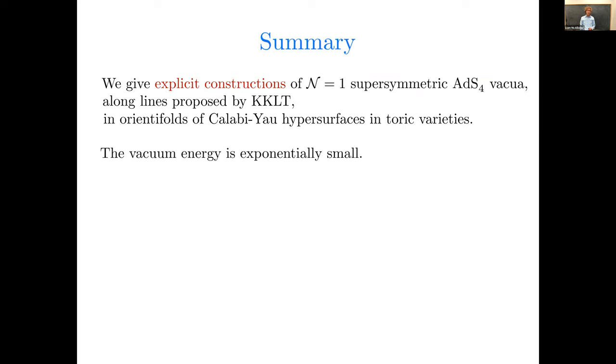We find that the vacuum energy is exponentially small. Indeed, in some of our examples, the magnitude of the vacuum energy is smaller than the observed value, 10 to the minus 123 in Planck units. But the internal spaces that we find are not huge. I'll argue that the alpha prime expansion is well controlled, but the spaces are not gigantic. They're, let's say, volume of order 1,000 in string units. So there's a huge hierarchy between the ADS scale, cosmological scale, and the Kaluza-Klein scale. These are scale-separated vacua.